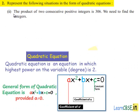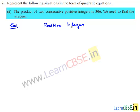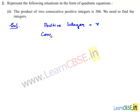Moving on to the second bit: the product of two consecutive positive integers is 306. We need to find the integers. Assume the first positive integer to be x, and the consecutive positive integer becomes x plus 1.